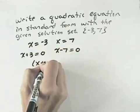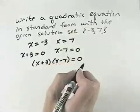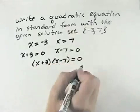That means one of our factors is x plus 3, and one of our factors is x minus 7. Together, those are the factors from our quadratic equation that need to equal 0.